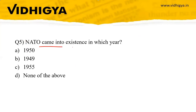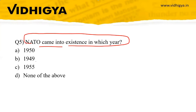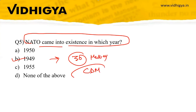Final question: NATO came into existence in which year? Options: 1950, 1949, 1955, none of the above. Correct answer: 1949. NATO has 30 members and is based on the principle of collective defense mechanism. That's all for this session — stay logical with Vidhikya, your best guide for competitive exam preparation.